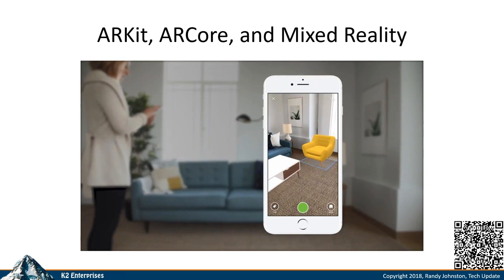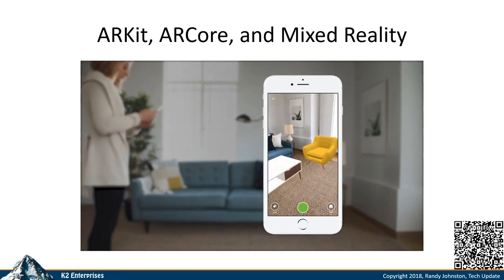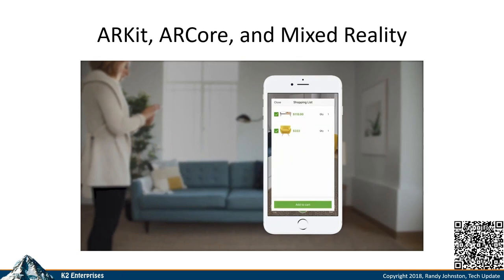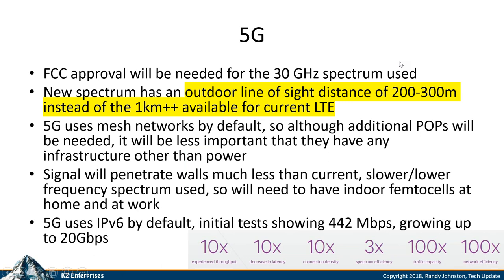This is a form of augmented reality — shoppers can use the camera in a phone to visualize items in a room and then place an order. Augmented reality and virtual reality pieces of technology are moving along well and are available today. Another technology that has arrived almost two full years earlier than previously suggested is 5G.